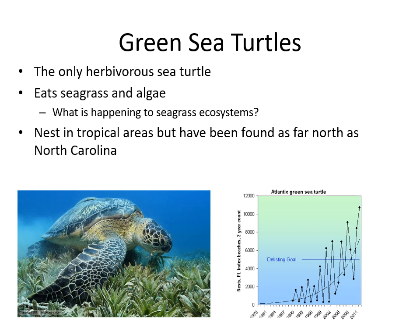Green sea turtles are probably the most abundant and will likely be delisted as a threatened species soon because they are rebounding from lower numbers. They are the only herbivorous sea turtle — they eat seagrasses, which require clear, unpolluted waters close to shore with adequate light. They nest in tropical areas but have been found as far north as North Carolina.